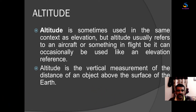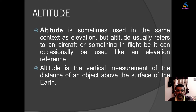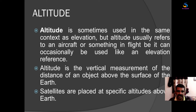Elevation is the measurement from mean sea level to an object on the ground, whereas altitude is the measurement from mean sea level to a flying object — such as a bird or an aeroplane. For example, satellites are placed at a specific altitude above the earth.